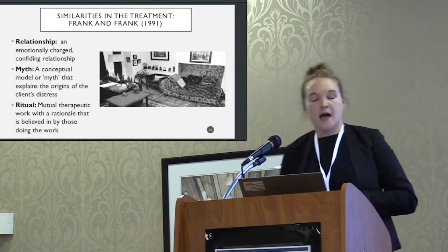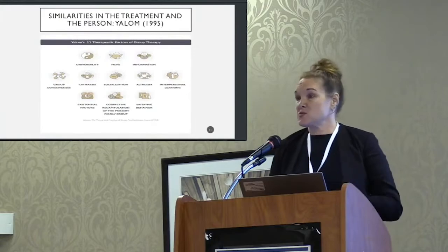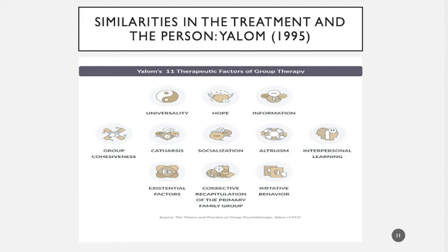This next model is about similarities within the treatment as well as the person and group process. This is Yalom's 11 processes of group therapy thought to be curative. There's a lot going on and I'm not going to cover each one, but I'll touch on a few to illustrate some points.